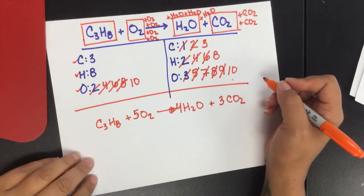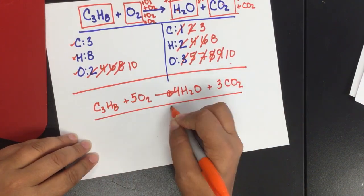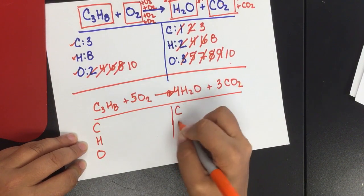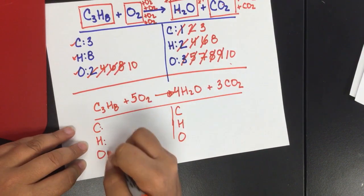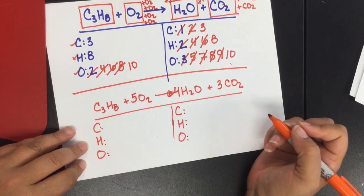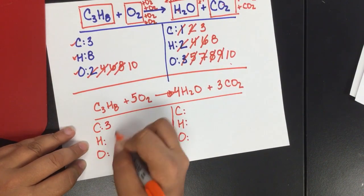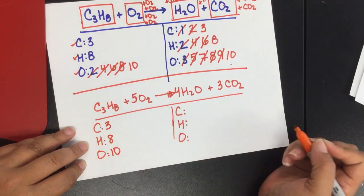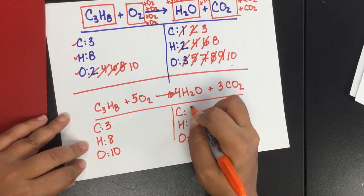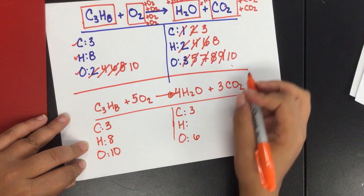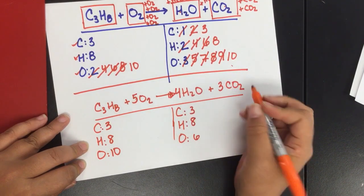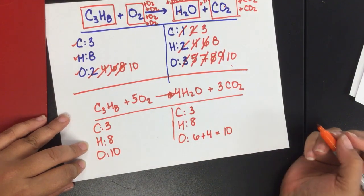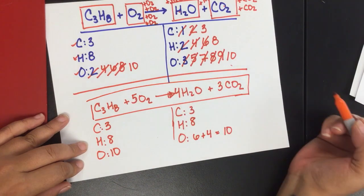Now I can always go back and check myself and check the math, and I would recommend you do this every time. You don't have to necessarily write it out, but double-check your math. I have three carbon, eight hydrogen, ten oxygen. I have three carbon, six oxygen, eight hydrogen, and another four oxygen, so ten total. So I know this was correctly done.